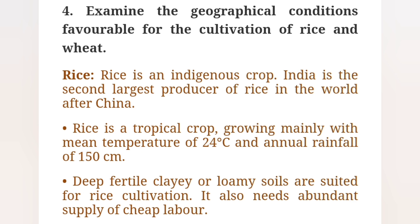Question 4: Examine the geographical conditions favorable for the cultivation of rice and wheat. Rice is an indigenous crop. India is the second largest producer of rice in the world after China. Rice is a tropical crop, growing mainly with a mean temperature of 24 degrees Celsius and annual rainfall of 150 cm. Deep, fertile clay or loamy soil are suited for rice cultivation. It also needs abundant supply of cheap labour.